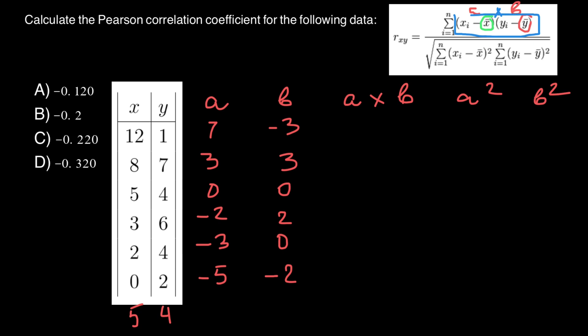Now for column A times B, we multiply A by B for each row. In the first row, 7 times negative 3 gives negative 21. Three times 3 gives 9. Zero times zero is 0. Negative 2 times 2 gives negative 4. Negative 3 times 0 gives 0. And negative 5 times negative 2 gives 10. Summing these: negative 21 plus 9 plus 0 plus negative 4 plus 0 plus 10 gives us negative 6.